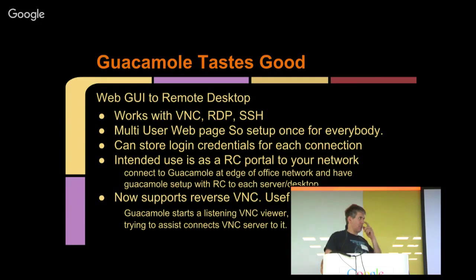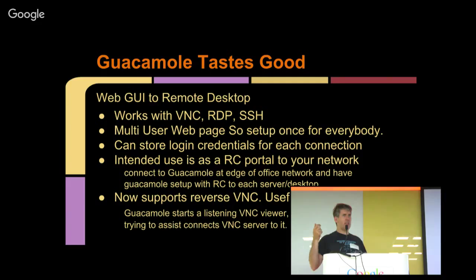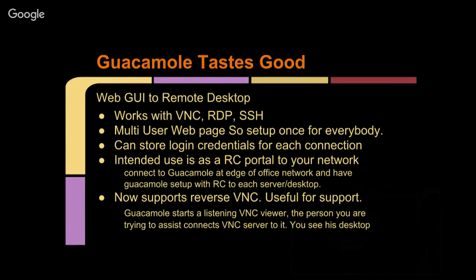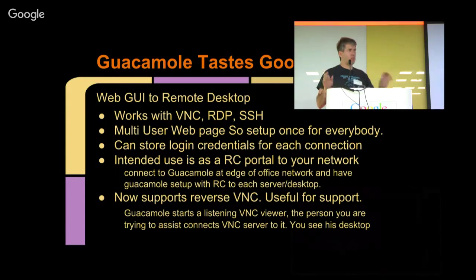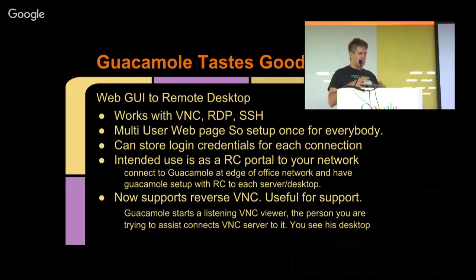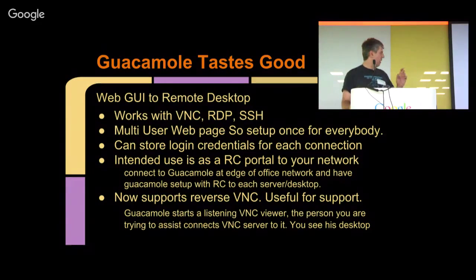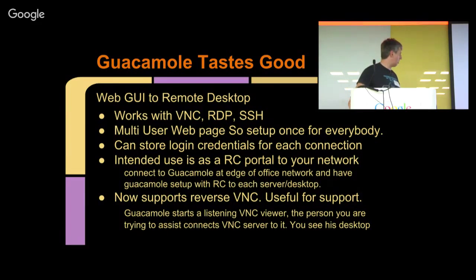The main reason I got interested in it is it now supports reverse VNC. Traditionally with VNC, the VNC server sits on the machine you want to control and you connect your viewer to it. In a reverse connection, you set your VNC viewer into listening mode and the VNC server connects back to it. This means the machine you're remote-controlling doesn't have to be at a fixed location — only your server does, in this case on AWS.